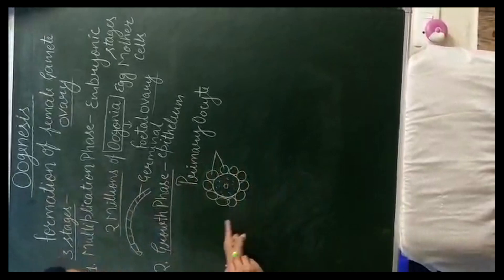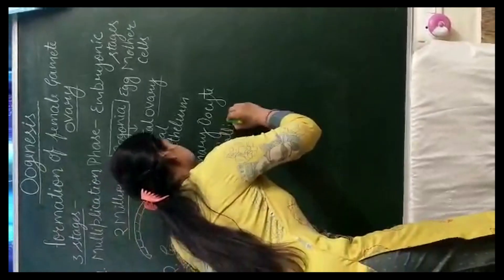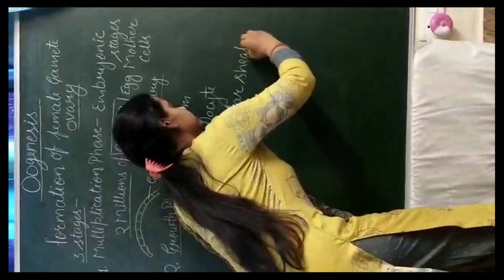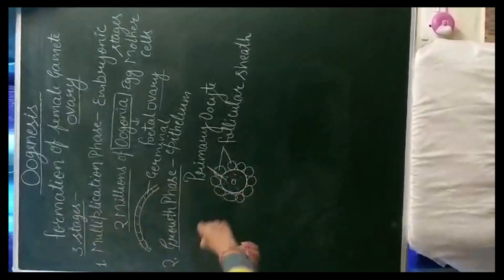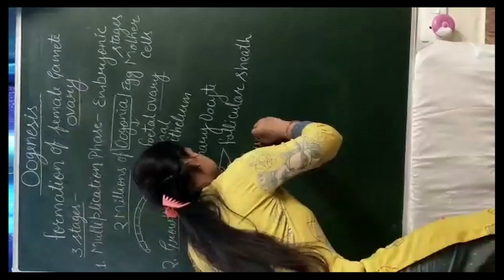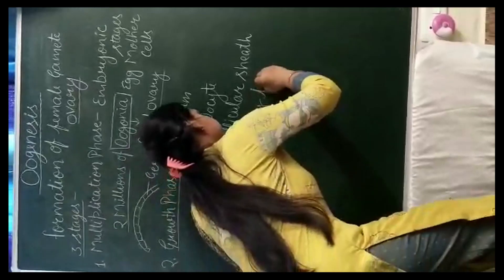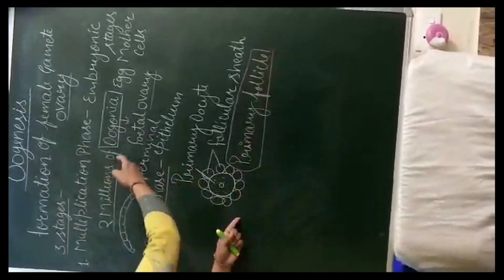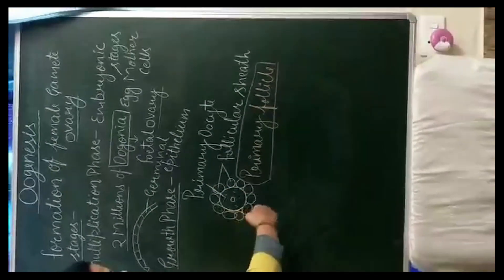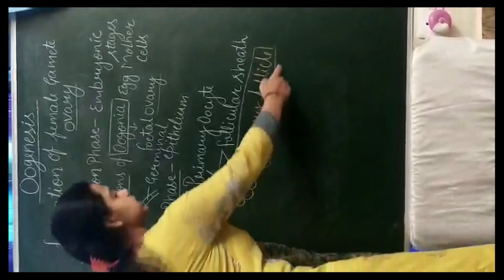These surrounding cells are also germ cells. They surround the primary oocyte from all sides. These cells are called the follicular sheath. The primary oocyte surrounded by follicular cells forms a structure called the primary follicle. So from the oogonium, the primary oocyte is formed. The primary oocyte surrounded by follicular cells gives the primary follicle.